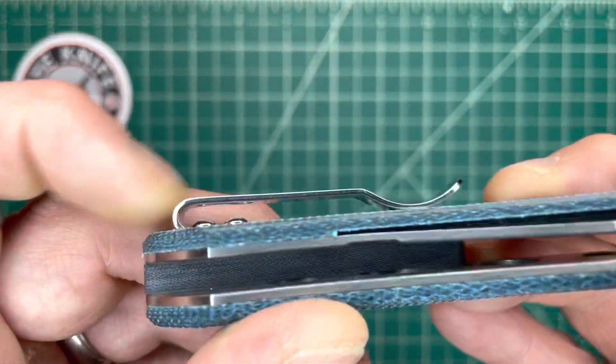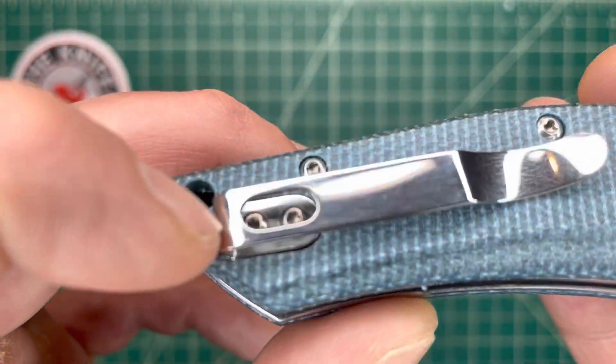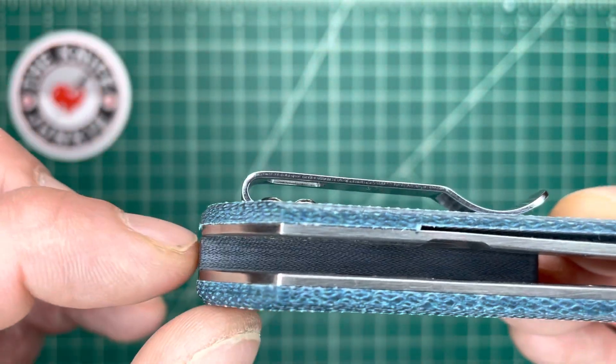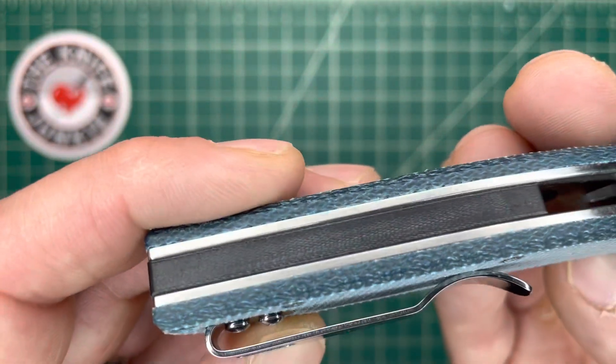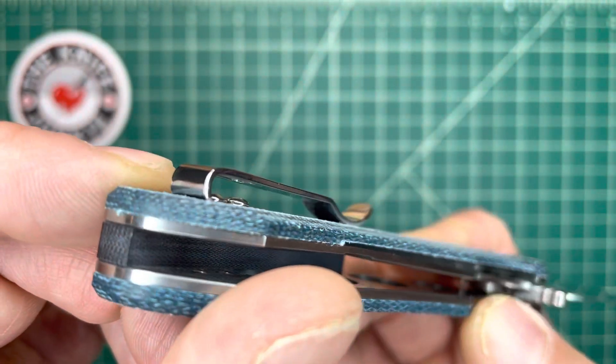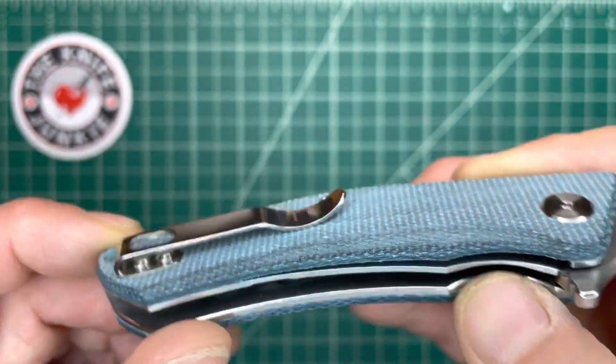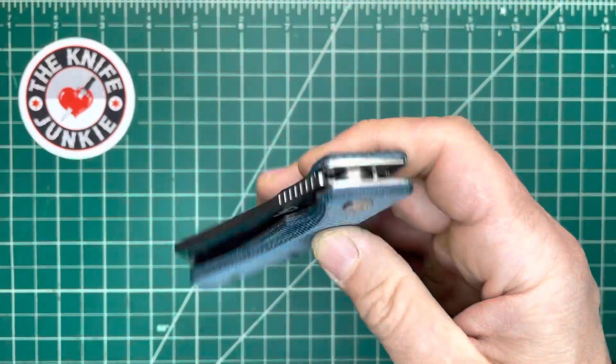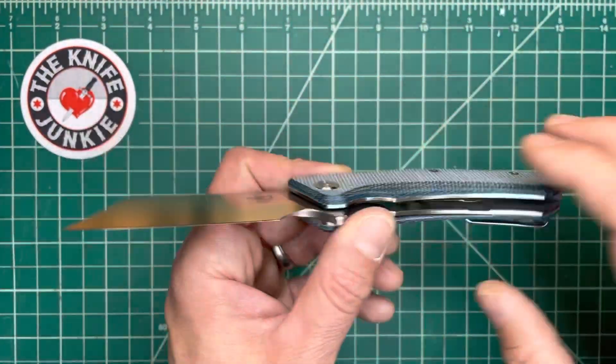You've got your deep carry pocket clip. You do have those rounded screws protruding up into the passageway. You can see that's a, looks like a G10 backspacer here, if I'm not mistaken. And just really excellent fit and finish that you've come to expect from Bestech.